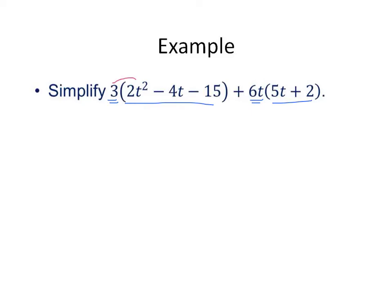Starting out with the 3, we're going to distribute it. We're going to get 6t squared minus 12t minus 45. That's what we get from the first one. Then the second one is going to give us plus, we're just going to tack it on here, 30t squared plus 12t.